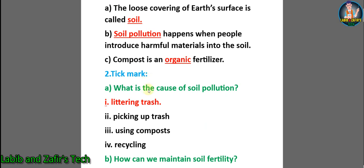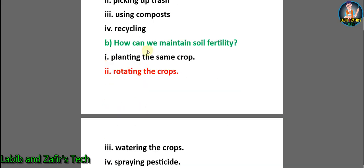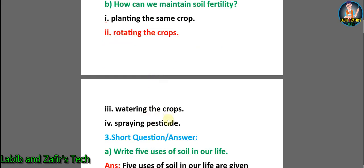Then number 2, tick mark. A: what is the cause of soil pollution? Options: 1. littering trash, 2. picking up trash, 3. using compost, 4. disliking. The main cause among these four is number 1, littering trash. Then number B: how can we maintain soil fertility? Options: 1. planting the same crop, 2. rotating the crops, 3. watering the crops before spraying pesticide. The correct answer is number 2, rotating the crops.